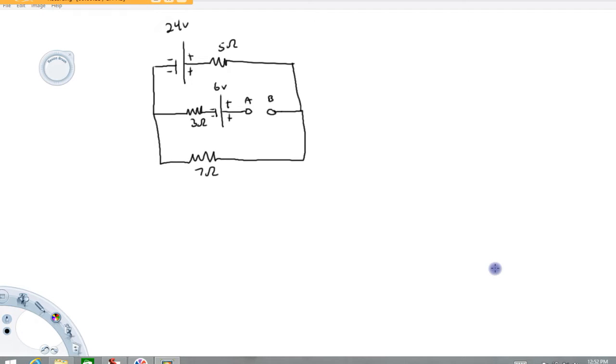This is very similar to the first video I made on this, I just threw a little curveball in here. The circuit we're looking at has a 24 volt battery, a 6 volt battery, and three resistors shown: a 5 ohm, a 3 ohm, and a 7 ohm. What we're going to try to do here is calculate the potential difference between points A and B in the circuit.